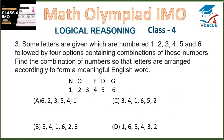Question 3: Some letters are given which are numbered 1, 2, 3, 4, 5 and 6, followed by 4 options containing combinations of these numbers. Find the combination of numbers so that the letters are arranged to form a meaningful English word. Let us check option A: 6 is G, 2 is O, 3 is L, 5 is D, 4 is E, 1 is N. So it spells GOLDEN — a meaningful word.